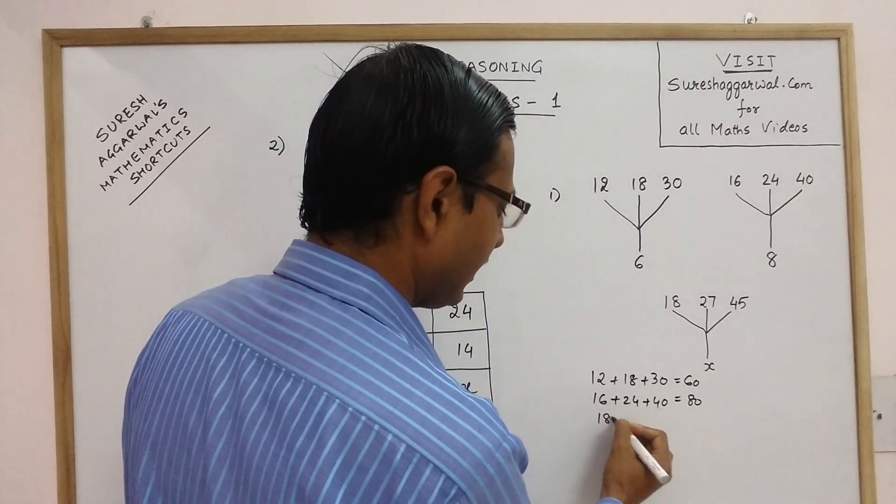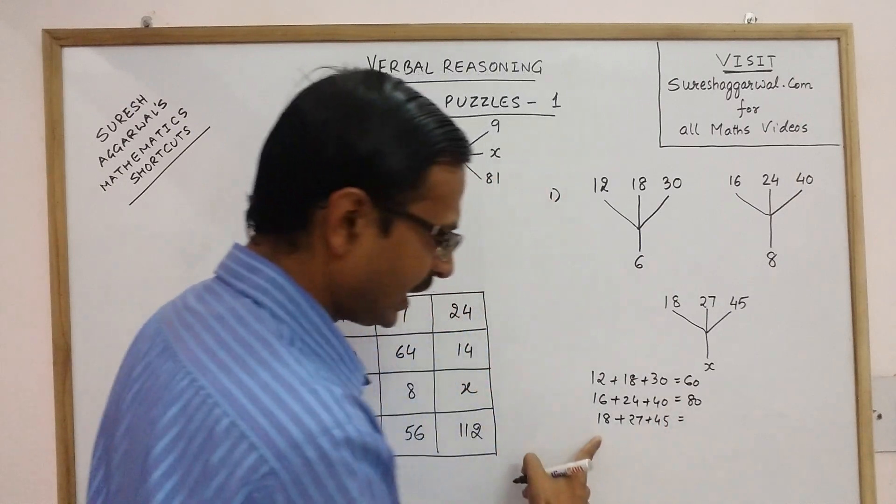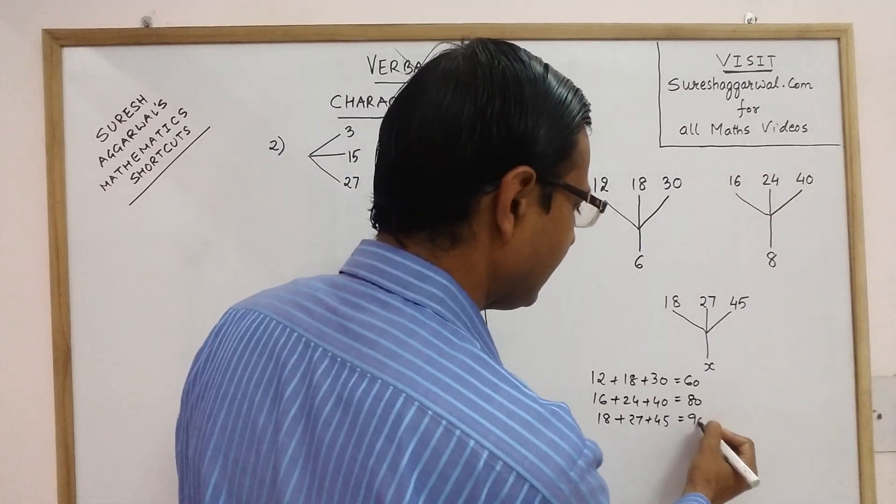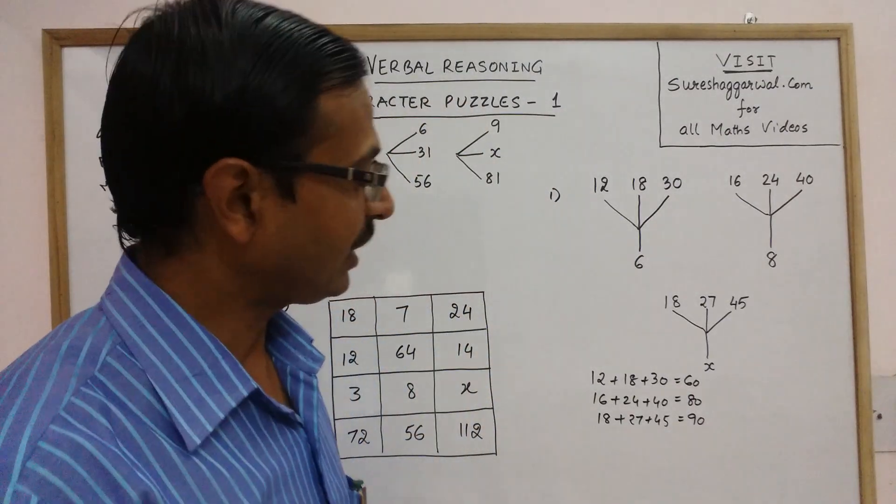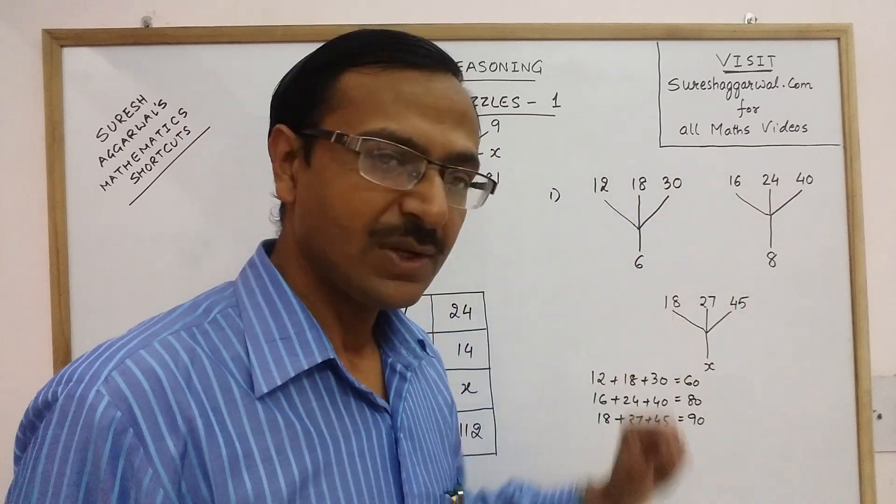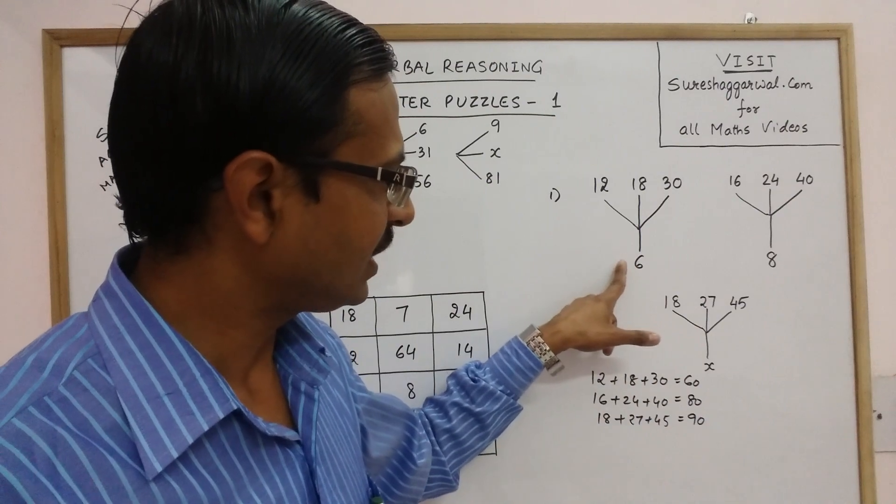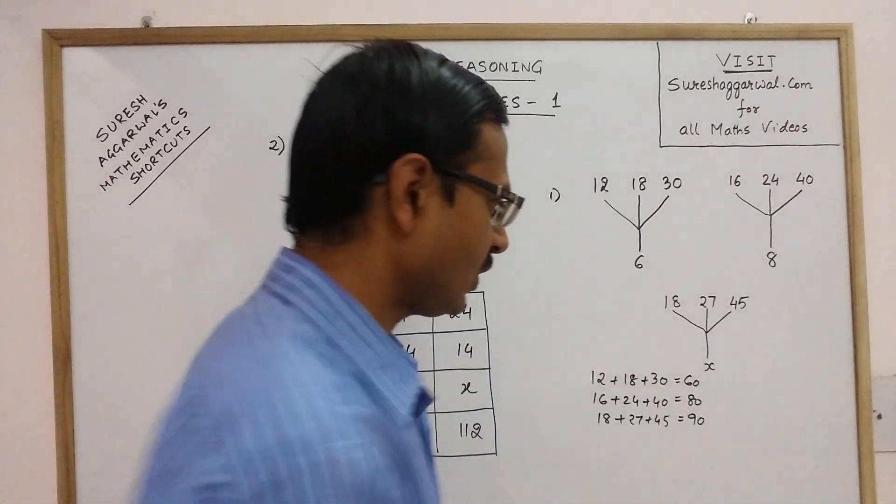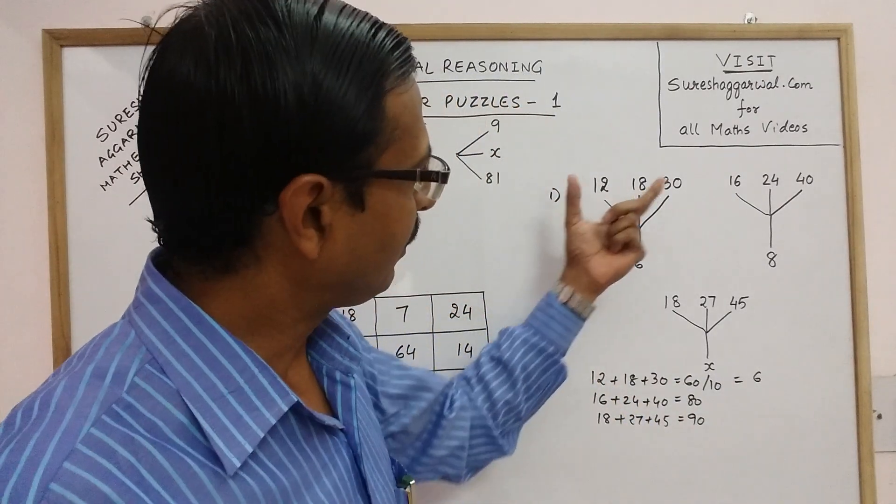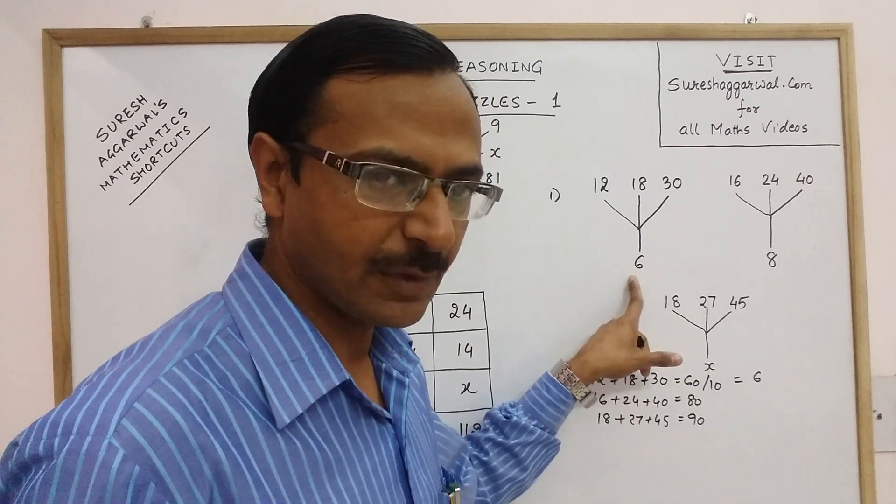Now in the third one, we have 18 plus 27 plus 45. Now see, 18 plus 27 is 45 and 45 is 90. So you see, we are obtaining round figures when we add these three numbers and how this round figure 60 is related to 6, it is one tenth. So if you divide this by 10, then we get 6. So by adding these three numbers and dividing it by 10, I have obtained this number.